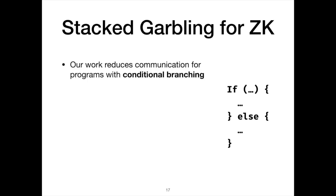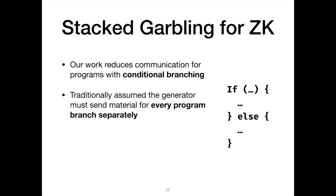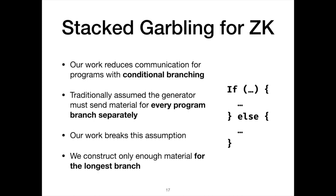This is where our work comes in — reducing communication for programs with conditional branching. Traditionally it has been assumed that the garbled circuit generator has to send material for every branch separately, to ensure the verifier can't tell which branch is actually being executed. The natural approach is to have the verifier send enough material for all branches so she cannot distinguish which one is actually being proved. But our work breaks this assumption.